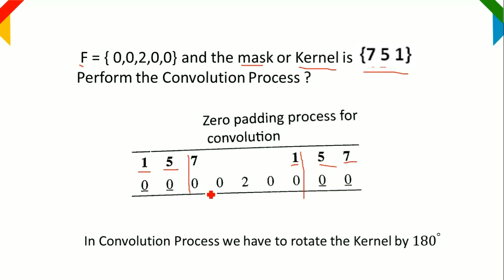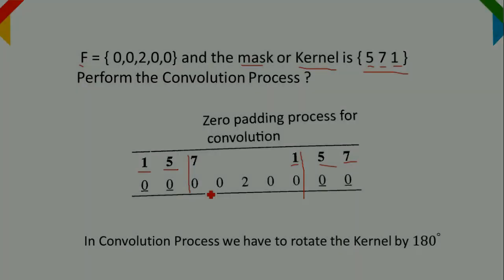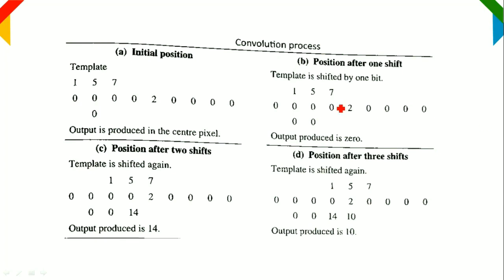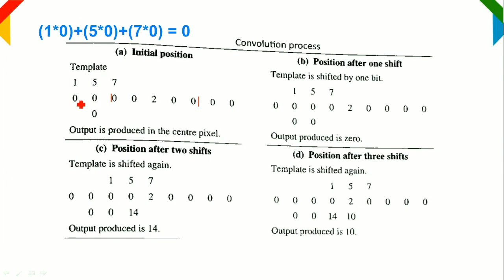We have to rotate the kernel by 180 degrees, and then do the convolution process with the zero-padded image. At the initial position, the kernel is 1, 5, 7. We do: 1×0 = 0, 5×0 = 0, 7×0 = 0. Adding them: 0 + 0 + 0 = 0. This resultant value is assigned to the center pixel. So the center pixel gets the value 0.